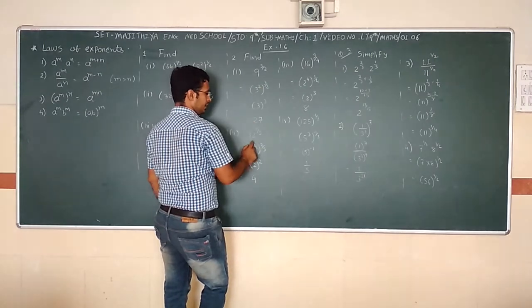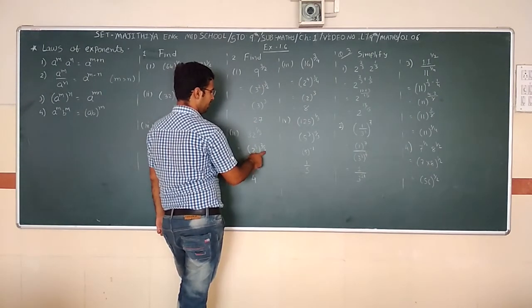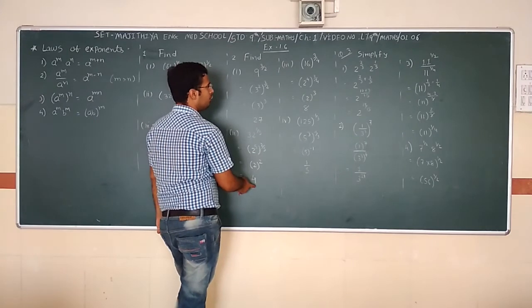Next: (2^5)^(2/5). The 5 cancels, giving 2² = 4.